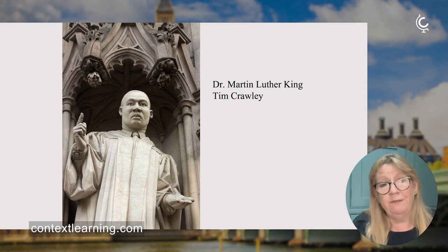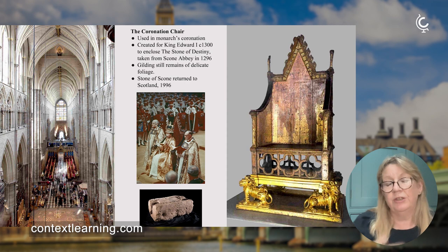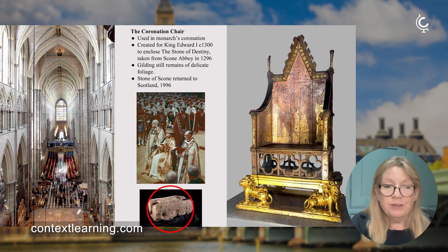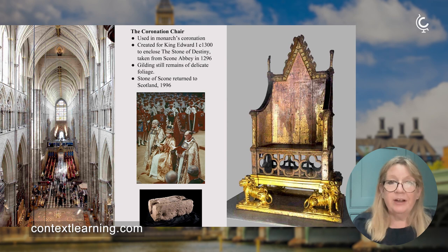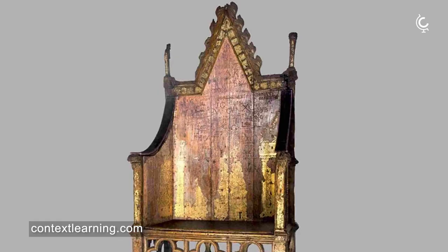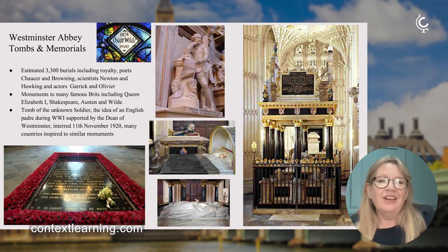Inside, you can see the Coronation Chair, used at coronations since 1300. It has a pierced gallery beneath the seat that used to hold the Stone of Scone, upon which Scottish kings were crowned. The Stone came to London in 1300 and the chair was made for it. Only in the last 20 years has the Stone returned to Scotland — it did come back for Charles's coronation. The chair has beautiful gilding, and if you look closely, it also has graffiti carved by naughty schoolboys in the 18th century.